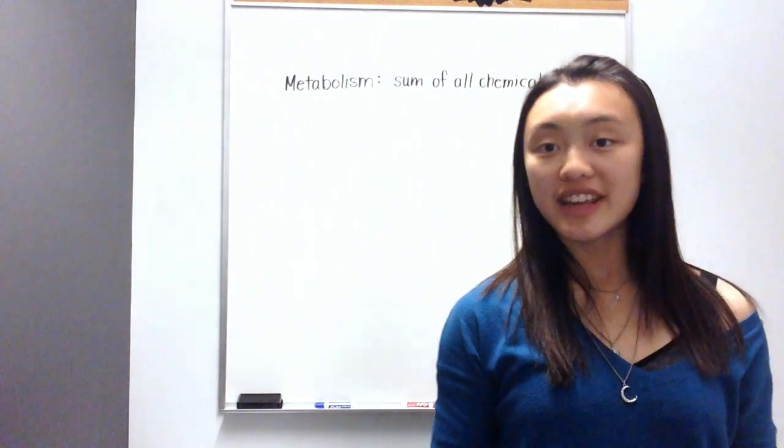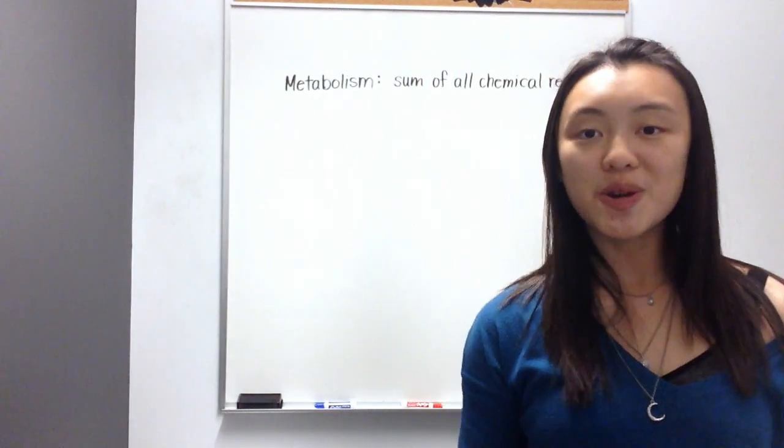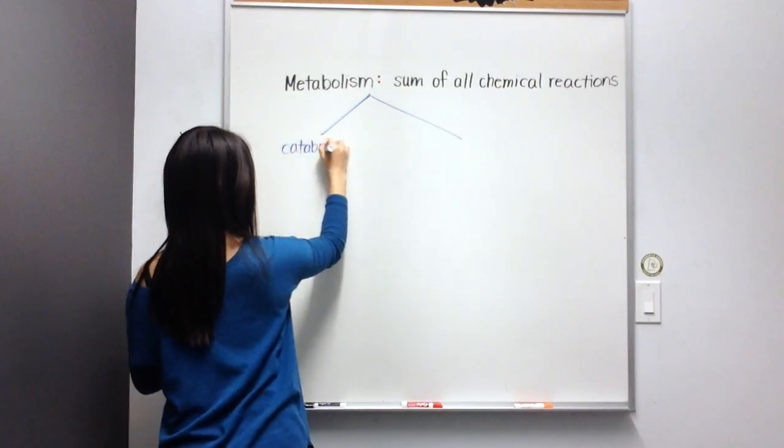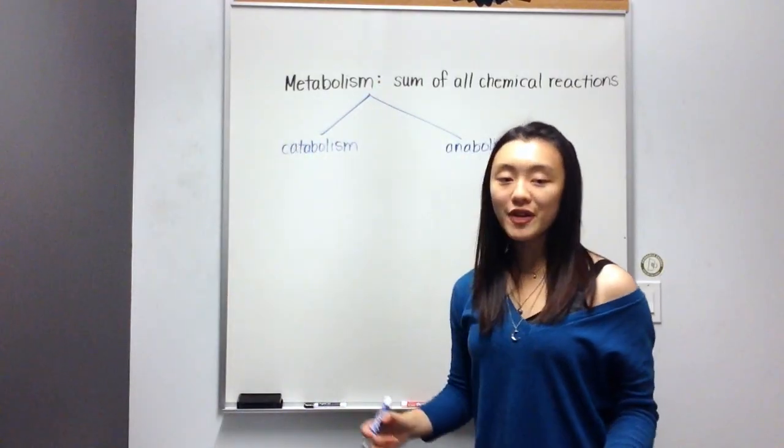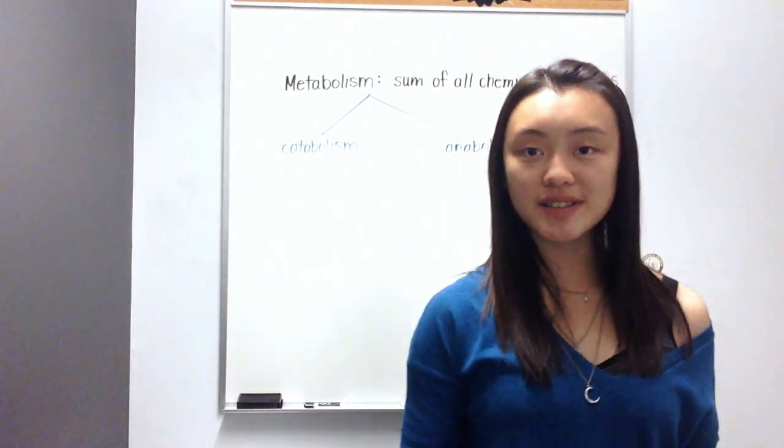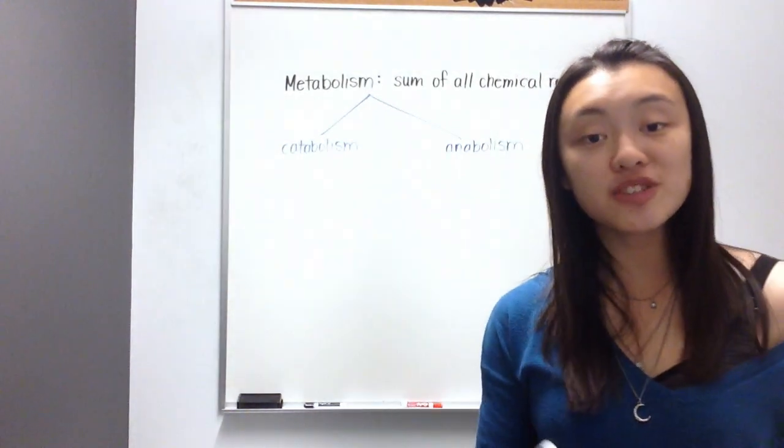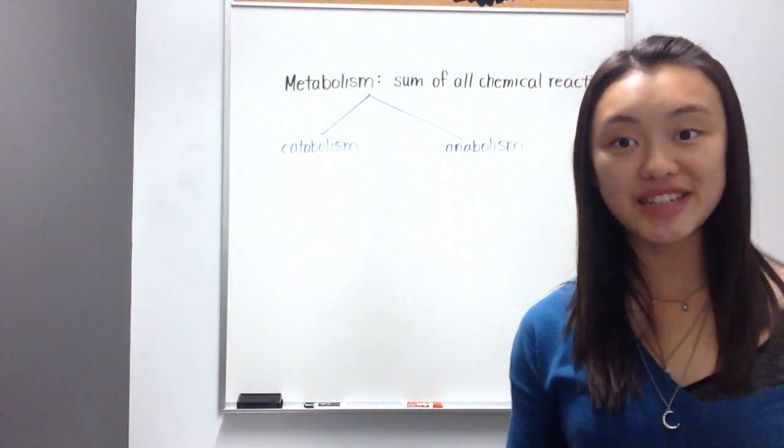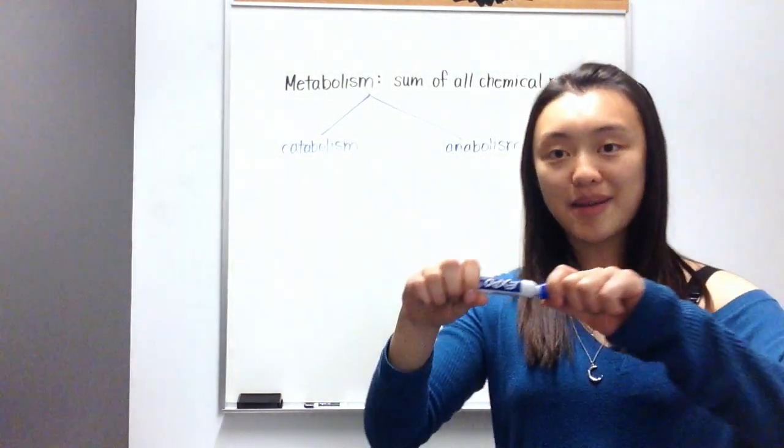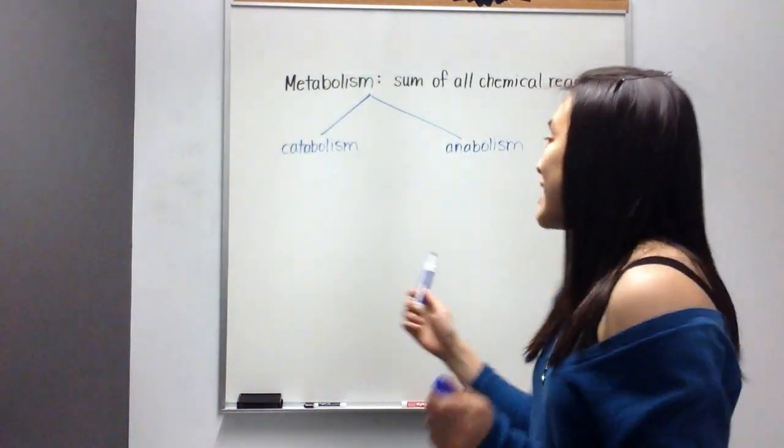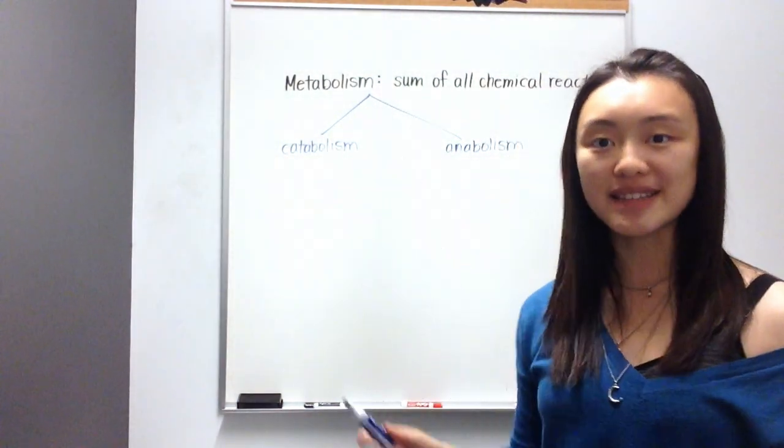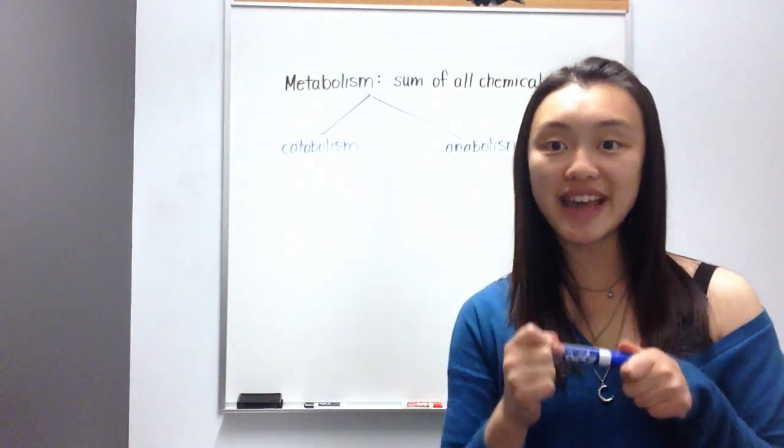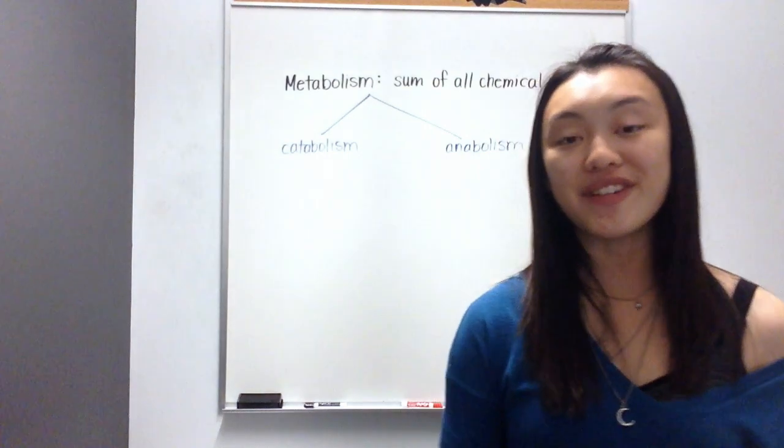Metabolism can then be broken down into two subdivisions. We have catabolism as well as anabolism. Whenever a chemical reaction occurs, bonds are being broken or added to change one thing into another substance or structure that's a little bit different. So if I have a structure and I break it apart, that is an example of catabolism. However, if I take two separate units and I join them together, this is an example of anabolism.